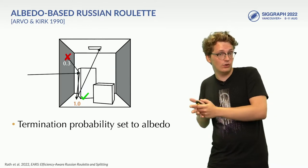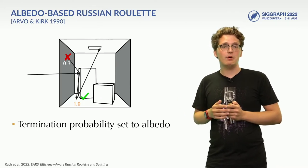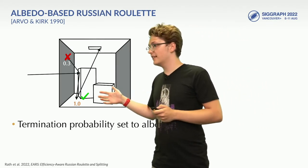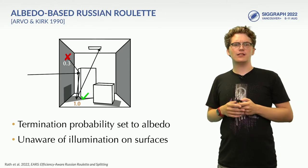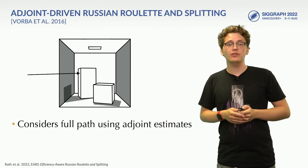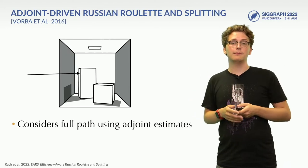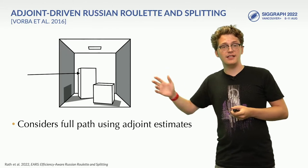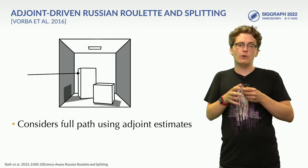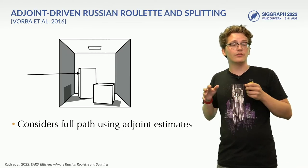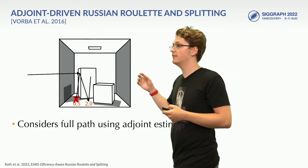Since Russian Roulette affects mostly low contributing paths, the additional noise incurred on the render is kept to a minimum. However, this method performs sub-optimally when the light distribution in our scene is uneven. A bright surface like this floor, for instance, can actually contribute little if it happens to be in shadow. This means we want some awareness of illumination, and luckily this is exactly what joint-driven Russian Roulette and splitting provides. In joint-driven Russian Roulette and splitting, the splitting factor is set to the contribution of the fully completed path. Of course, we do not know the complete path yet, but by utilizing statistics built over earlier completed paths, we can get an estimate for what the remainder of the path will look like, allowing us to estimate the full contribution of the path.